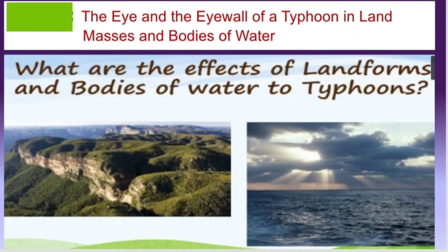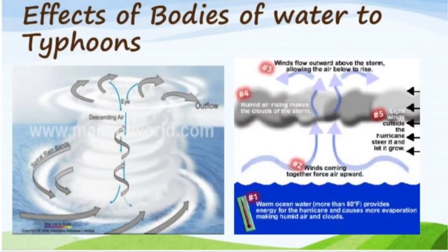Now for Day 3: the eye and eyewall of a typhoon over land masses and bodies of water. A typhoon gets its energy from warm ocean water. When a typhoon stays longer over the ocean — like the Pacific — it gains more wind and water and gets stronger. These winds and water can damage man-made structures such as houses, buildings, bridges, railways, and electrical wirings, as well as natural features like large trees, rice fields, and crops.